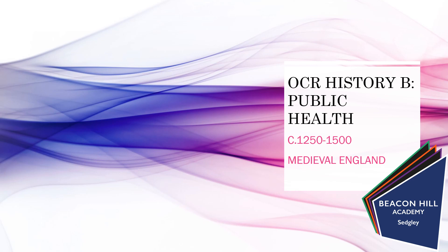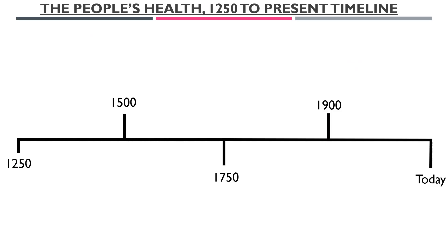Hello Year 11 and welcome to some videos based around OCR History B public health. This particular video is on the medieval period, which is 1250 to 1500. There will be others in the series that focus on the next three time periods. It's really important as you complete your exam to know the different time periods and the dates that come with those, along with the centuries that are attached to them.